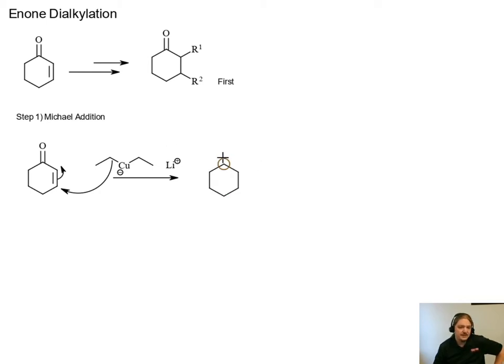But our first step is the Michael addition. And I'm going to have an ethyl group here. And we have our enolate anion product. And in a typical Michael addition, then we would add an acid to this to work it up and generate the neutral product. We're not going to do that today. We're going to interrupt that process by instead adding an electrophile.